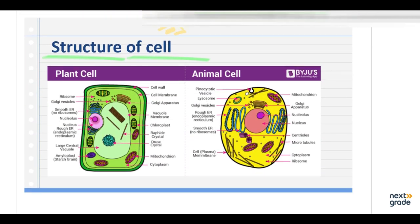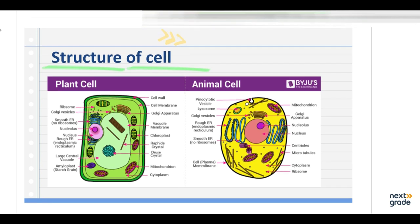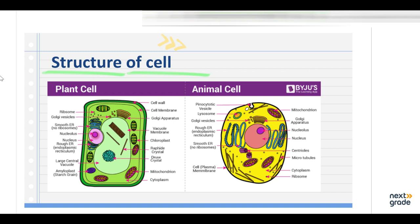In this diagram we can see the structure of both the animal and the plant cell. Looking at the plant cell first: the cell wall is the outer boundary, then the inner boundary is the cell membrane. This is the Golgi apparatus, then the vacuole membrane, and chloroplast is present here. We also have ribosomes, endoplasmic reticulum, nucleolus, nucleus, rough and smooth endoplasmic reticulum, and a large central vacuole.